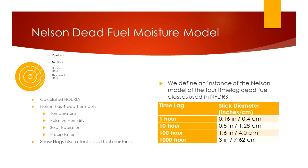The simplest way to think about this is that in the Nelson model, we create sticks — sticks of any size that we want. If we go in and tell the Nelson model we create a little tiny stick and force the weather conditions around that tiny stick based on these four weather observations — temperature, relative humidity, solar radiation, and precipitation — the model does the rest.